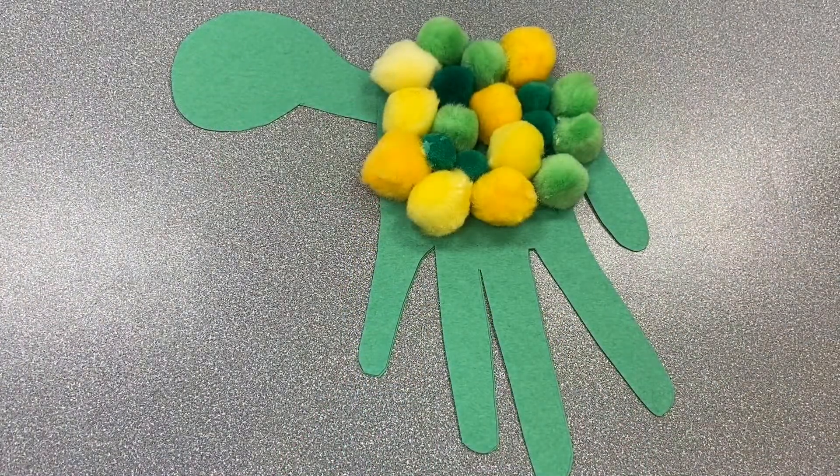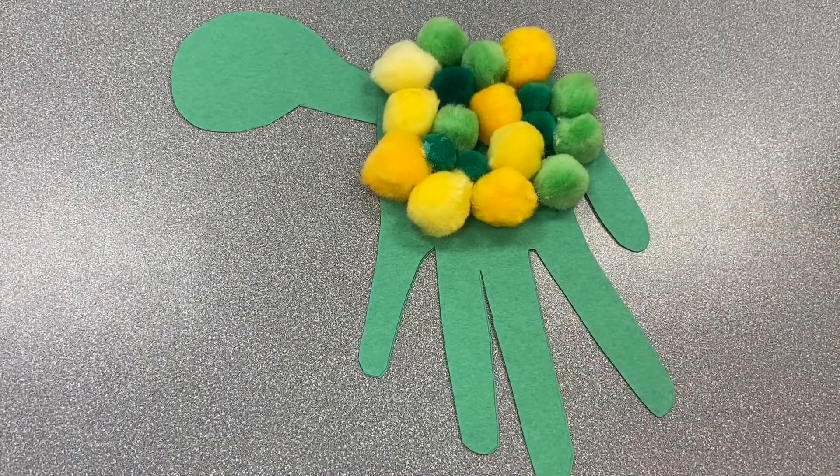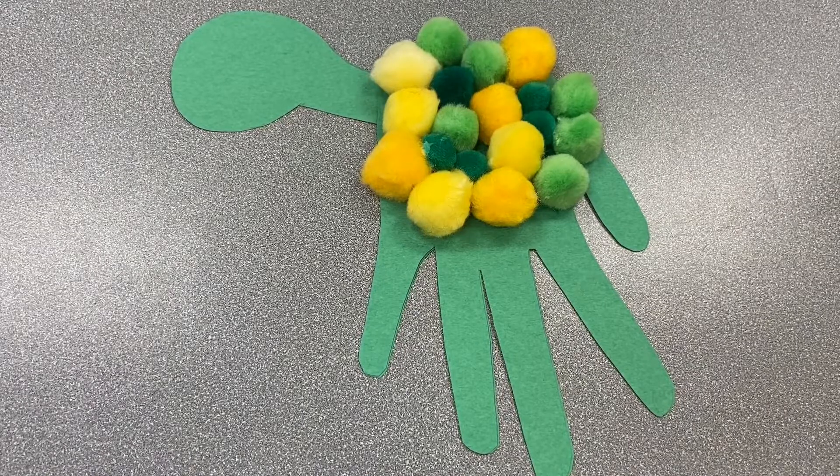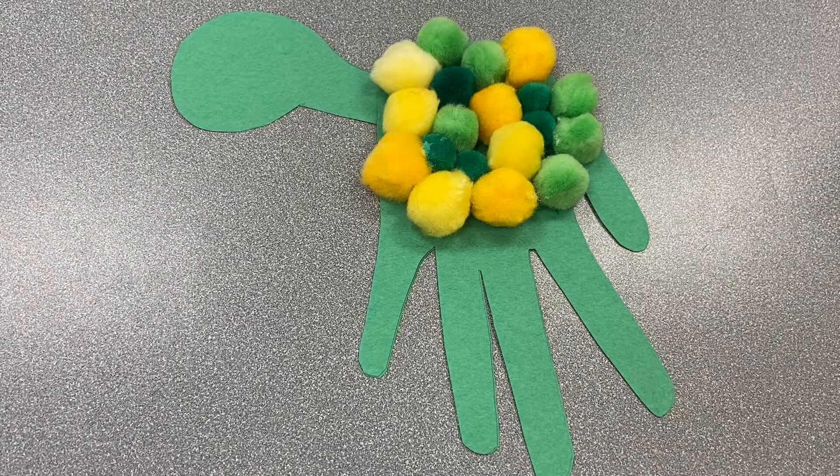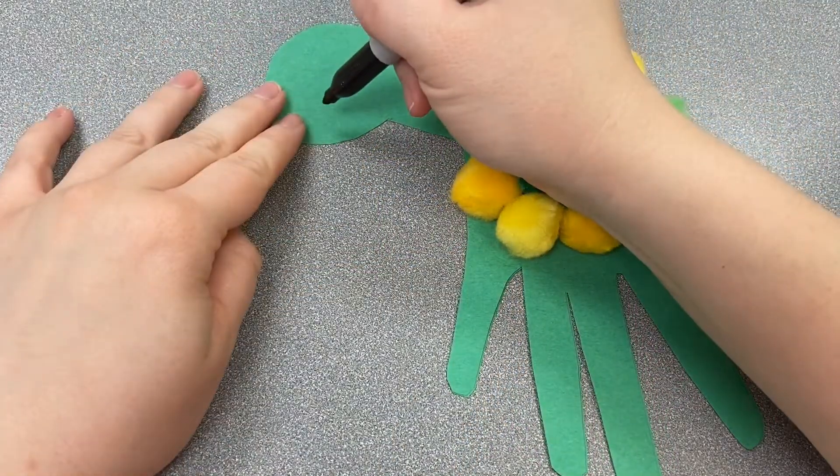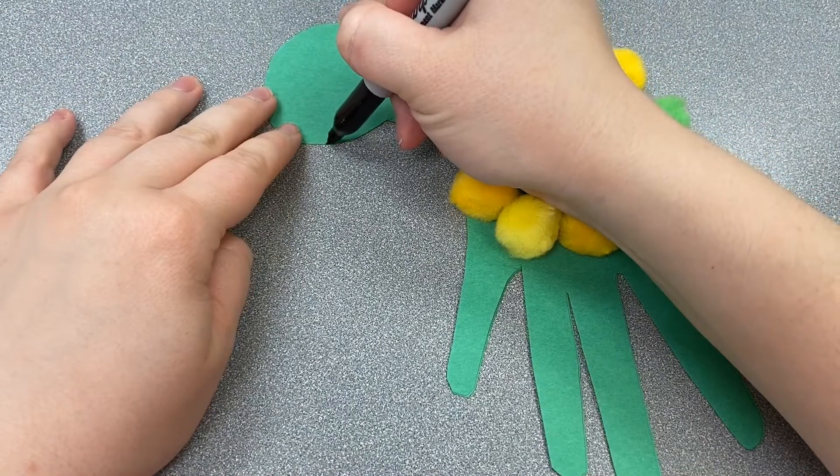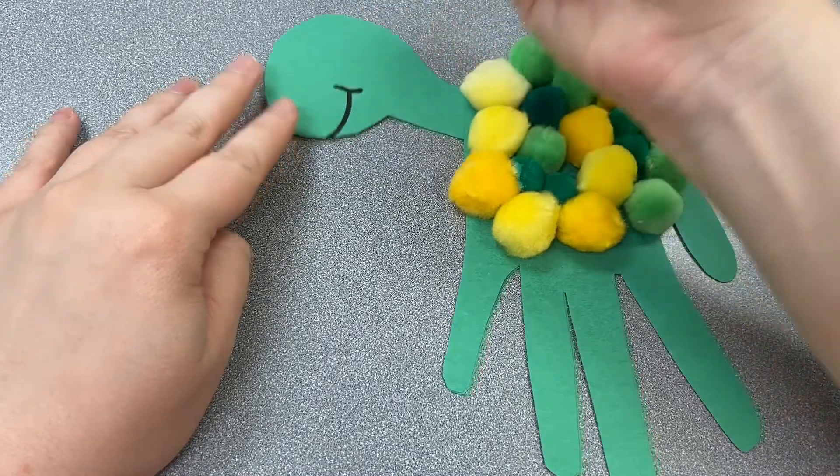So once you glue the turtle head on the inside of the card it should look like this. Next we're going to draw our turtle a little smile. We're going to take our marker and we're just going to make him look happy. So just draw your best happy face. There's a nice little happy face. And there you go.